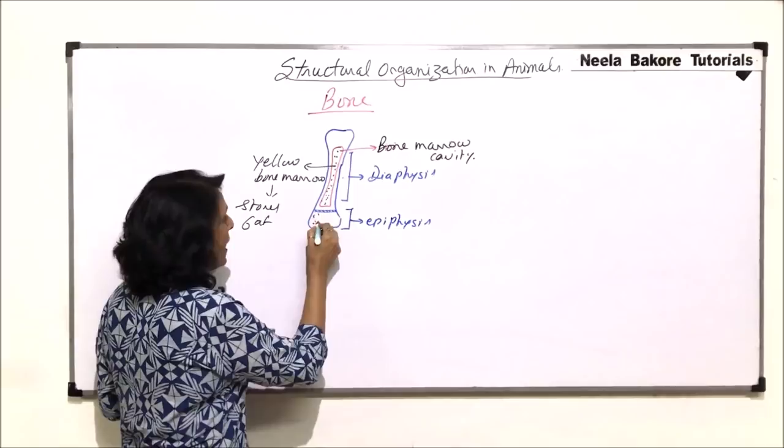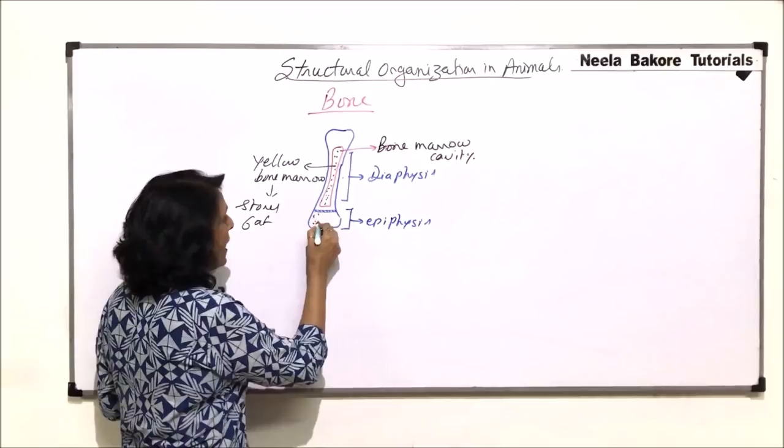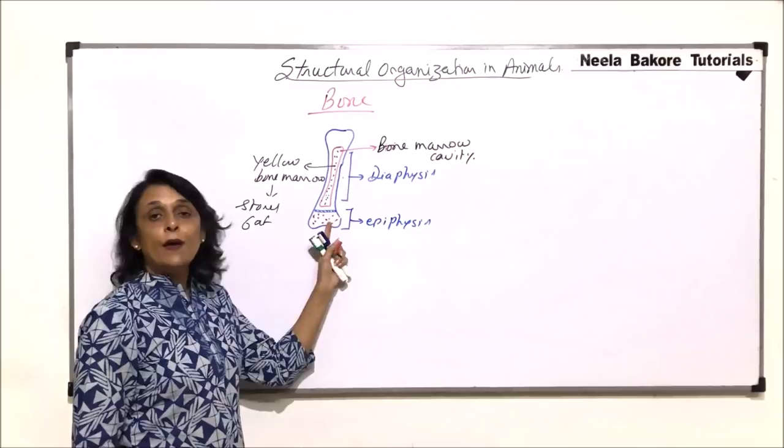In the epiphysis part, there is again bone marrow, and that bone marrow is in between the cells. Once we understand the structure, we'll know where this marrow is.